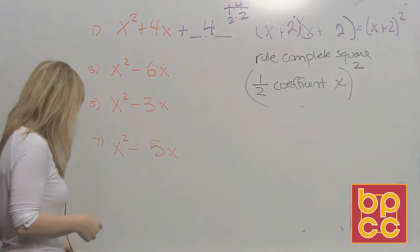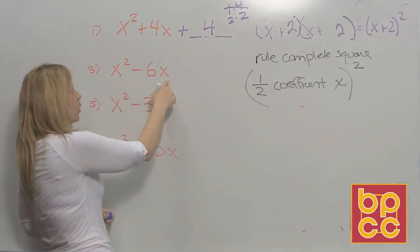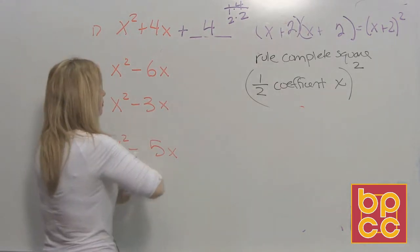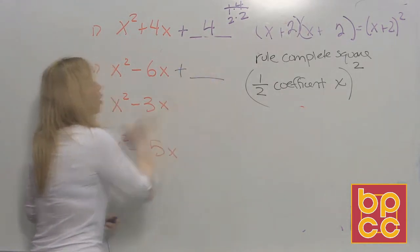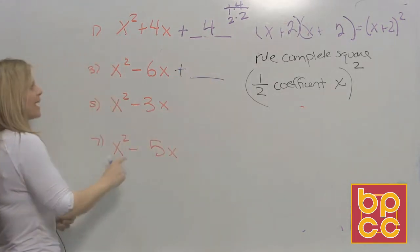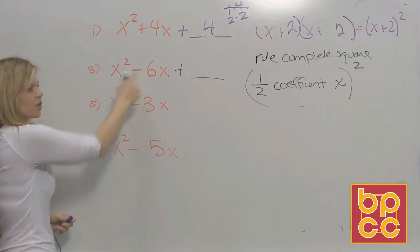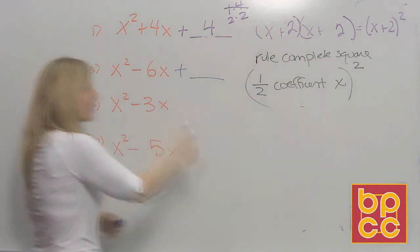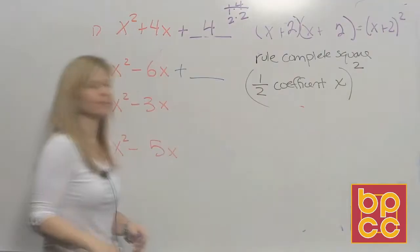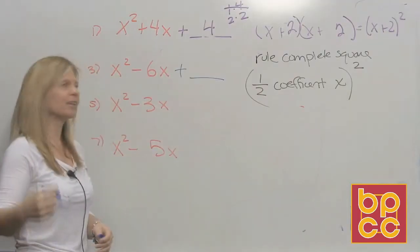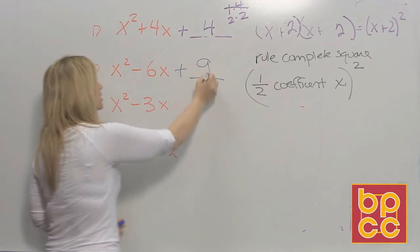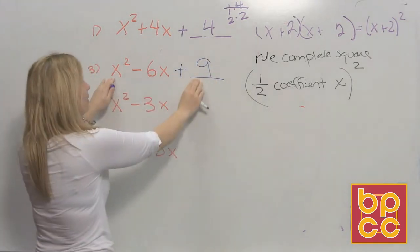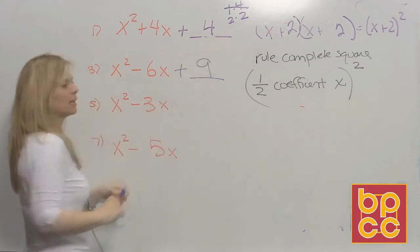Now that we have the rule, this is simple. For example 3, I want to complete the square and add the missing number. I take half of negative 6, which is negative 3, then I square negative 3: negative 3 times negative 3 is 9. You have now made a trinomial, and this is guaranteed to factor to be alike.